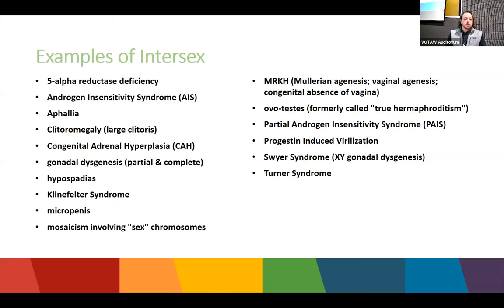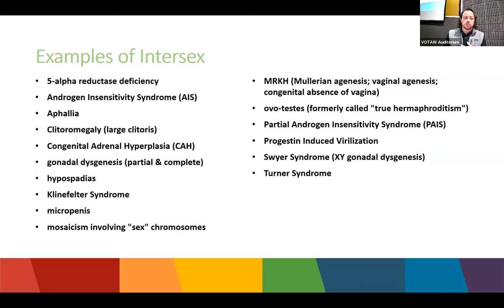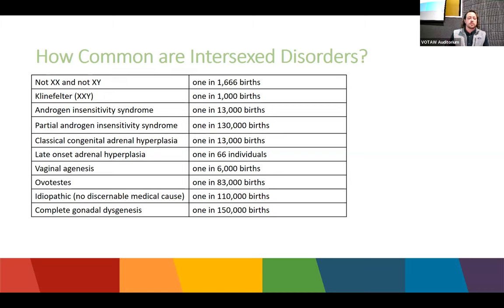Some basic examples include Klinefelter syndrome, mosaicism, Turner syndrome (XO), and even hypospadias or clitoromegaly, because they don't fit the typical idea of what external anatomy should look like. DSDs are more common than we think. Some are rare, like partial androgen insensitivity, but Klinefelter and Turner syndromes occur in about one in a thousand births — meaning at least one baby at most large hospitals per year.